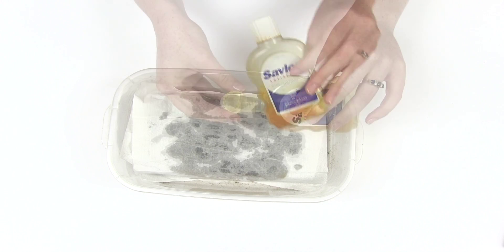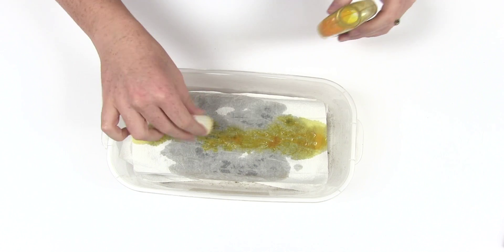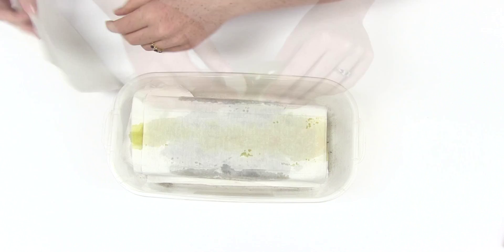You can also use Dettol, Savlon, or another antibacterial soap to kill the bacteria and keep the insects from rotting and smelling bad, but this step is optional.